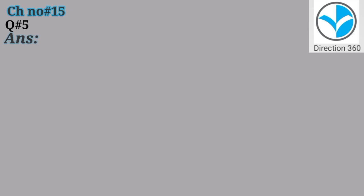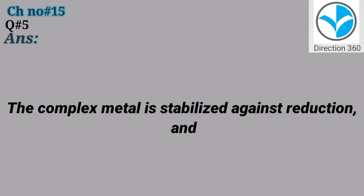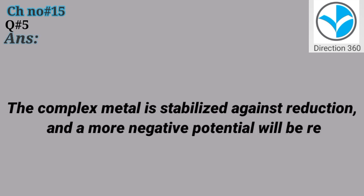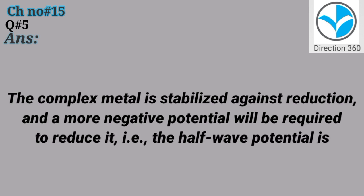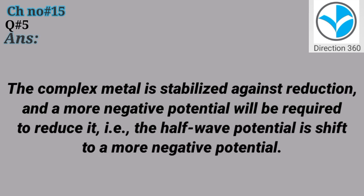Question No. 5: What effect does complexation have on the voltammetric reduction of a metal ion? The complex metal is stabilized against reduction, and a more negative potential will be required to reduce it. For example, the half-wave potential is shifted to a more negative potential.